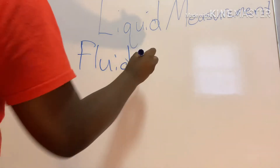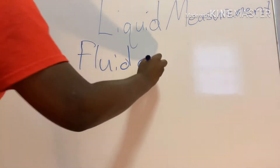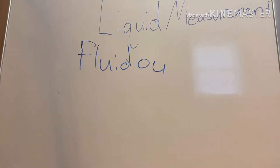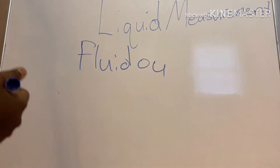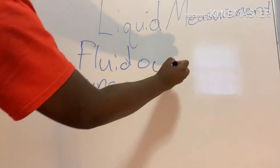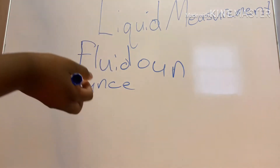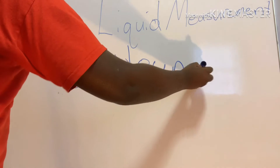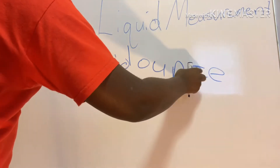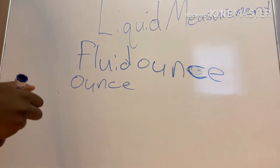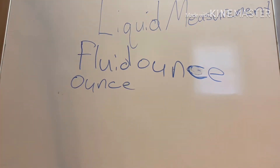Fluid ounces — the reason it has 'fluid' at the beginning is because in different types of measurements, you measure different things. For weight, you would have regular ounces, not fluid ounces, because it's weight, not liquid. But since we're dealing with liquid, you would have fluid ounces.